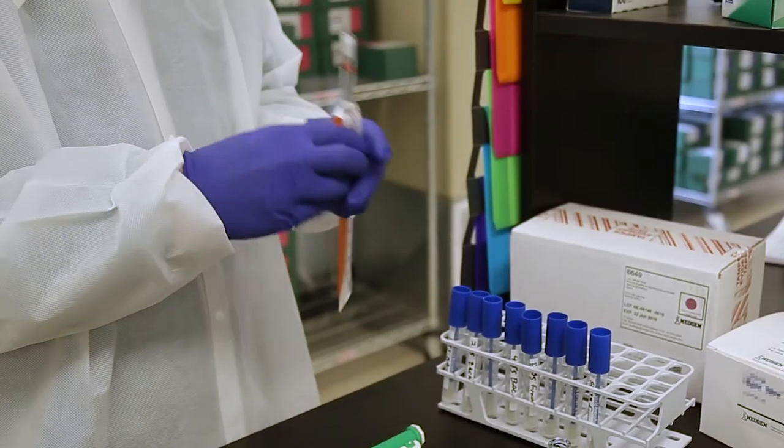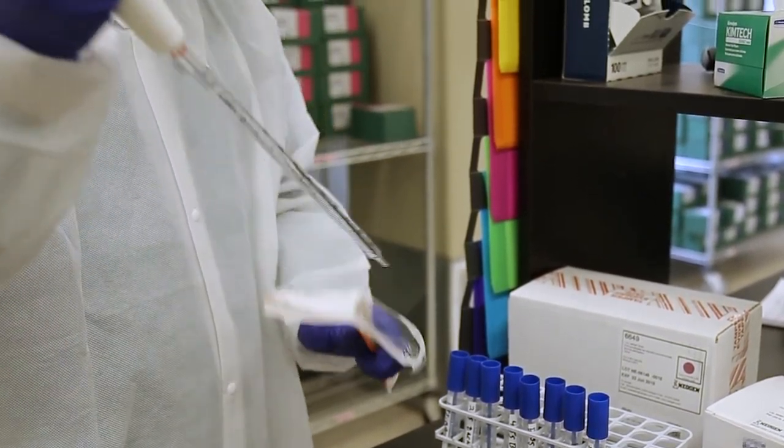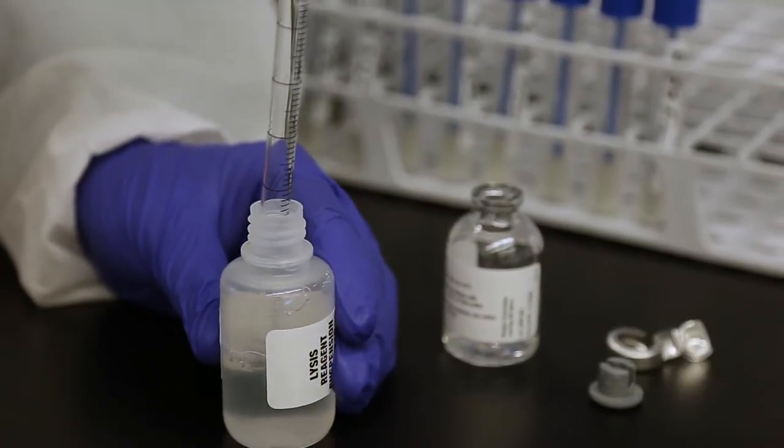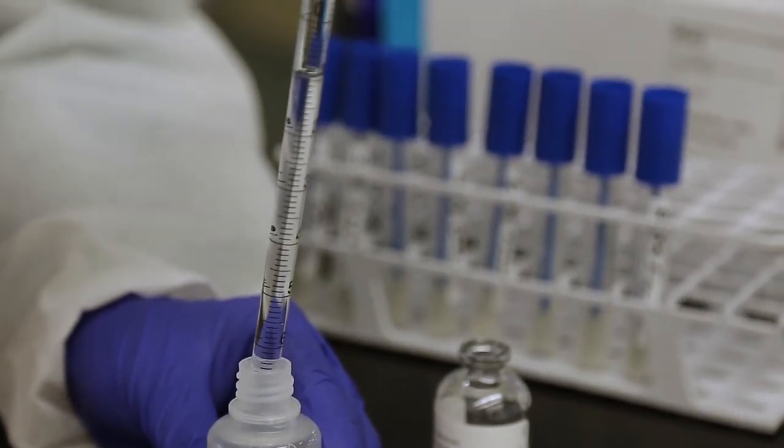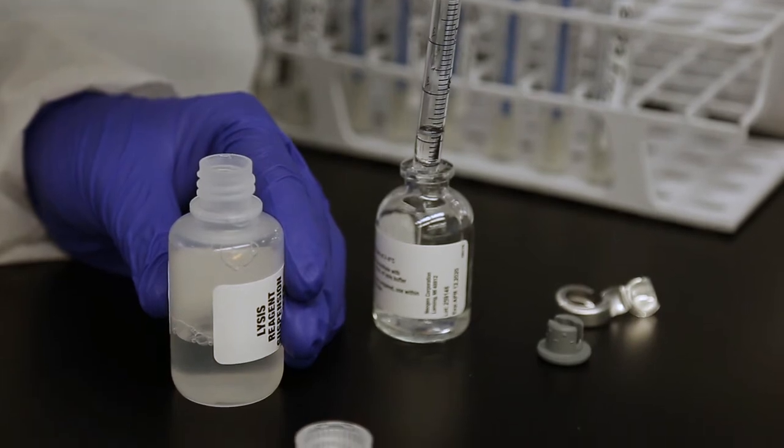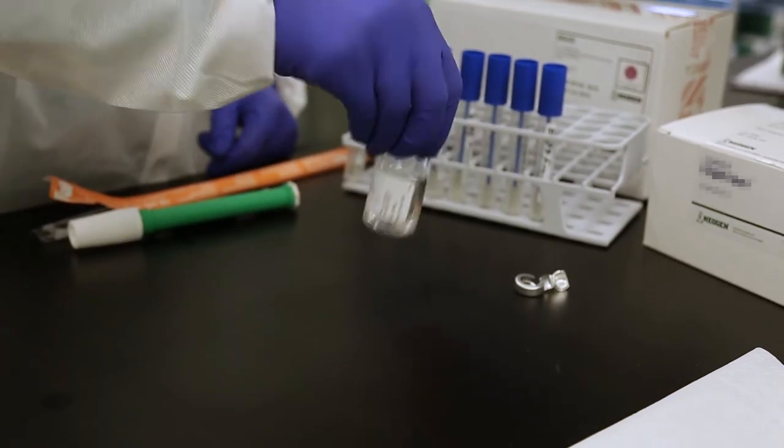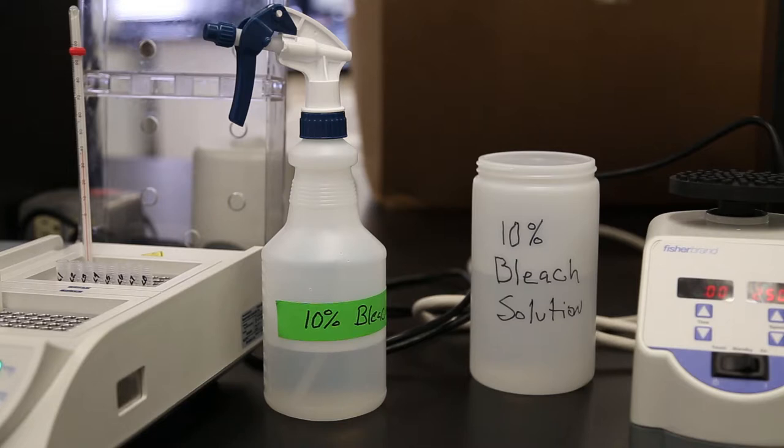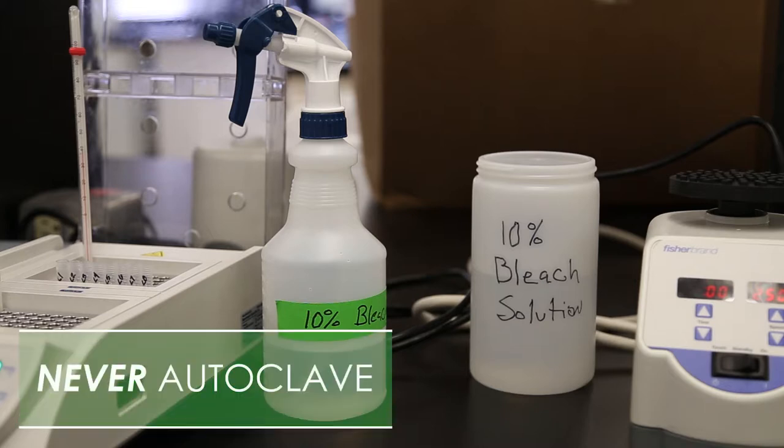Reagent preparation. Using the 10 milliliter serological pipette and provided pipetter, add 18 milliliters of the lysis reagent to one vial of the lyophilized lysis reagent that's been at room temperature for at least 15 minutes but less than one hour. Gently swirl to mix. This is enough lysis buffer for 18 samples. Return the non-reconstituted reagents to refrigeration. Any reconstituted reagents can be stored at 2 to 8 degrees Celsius for up to 30 days. Mix up a fresh container of 10% bleach solution daily. The pipette tips and used reaction tubes and caps will go into this solution.